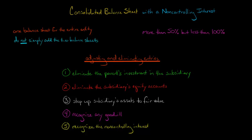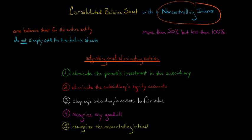However, there's a little bit of an issue when you acquire less than 100% because you're getting all the target's assets and liabilities — they're all coming over to your corporation as the purchaser. However, you own less than 100% of that target corporation. So we're going to create a stockholders' equity account called Non-Controlling Interest to basically signify that there are other shareholders that have claims against the net assets of that subsidiary.